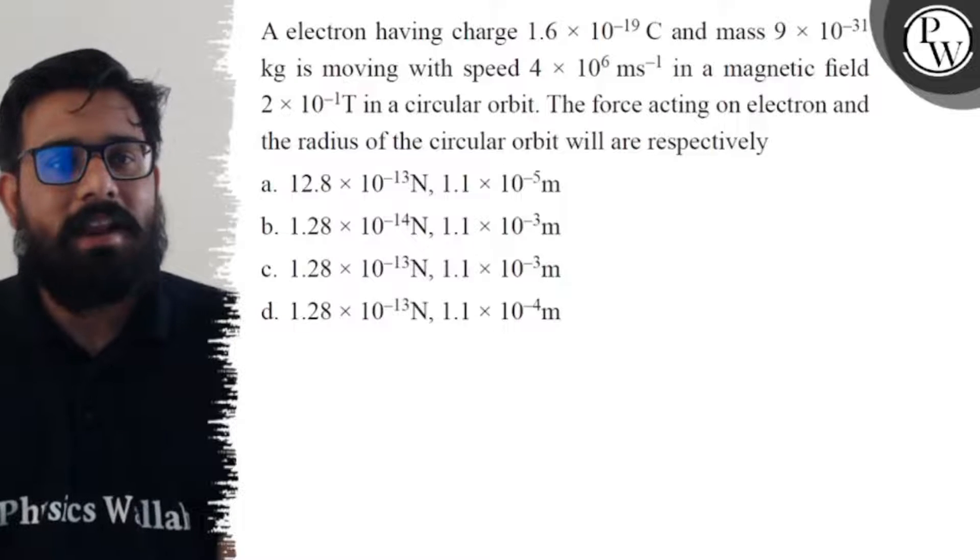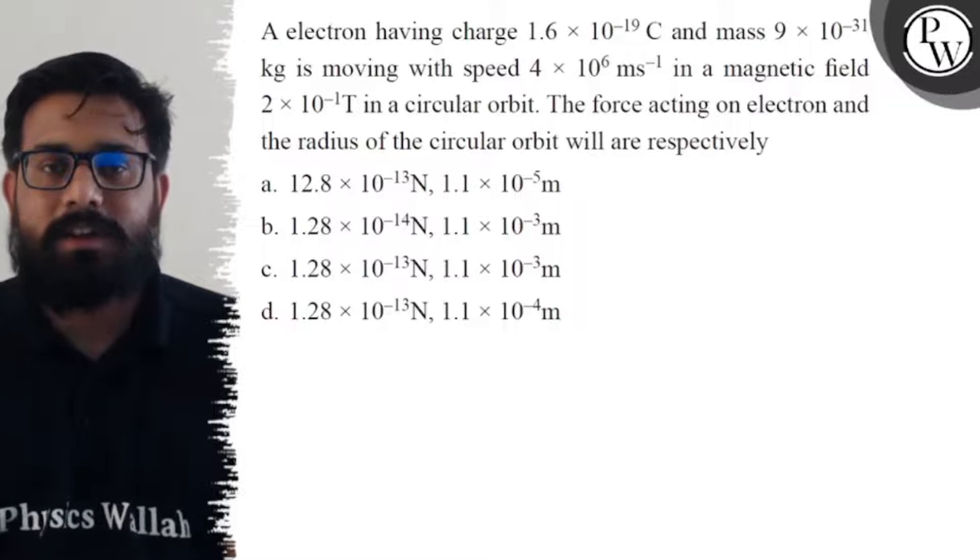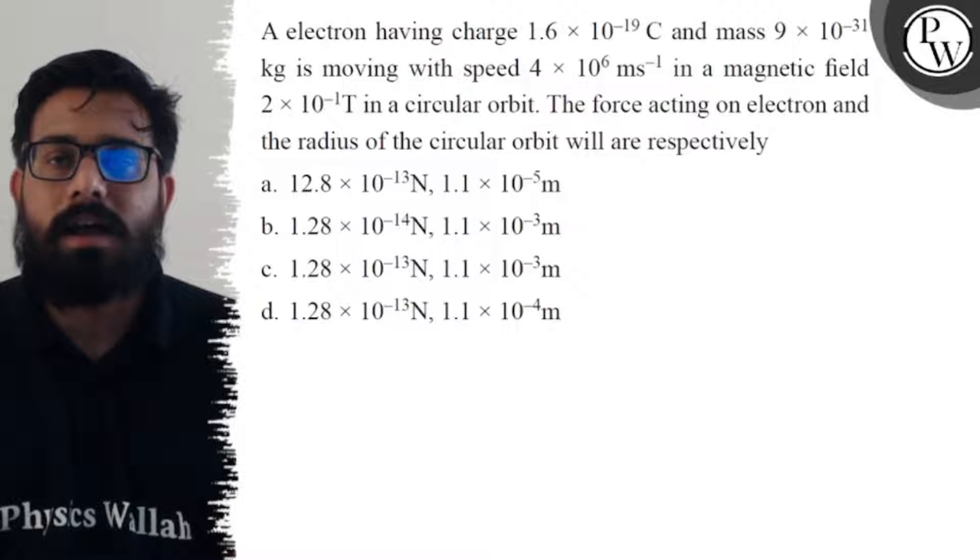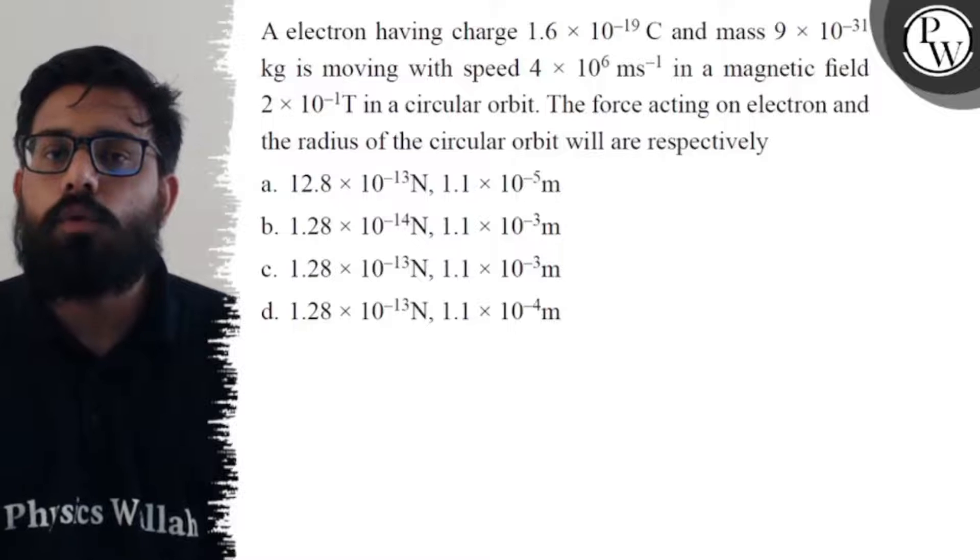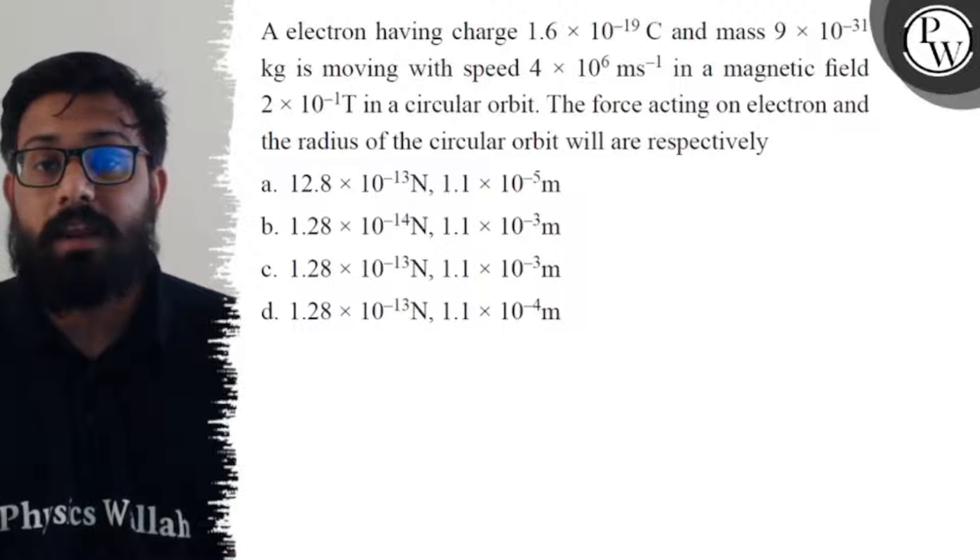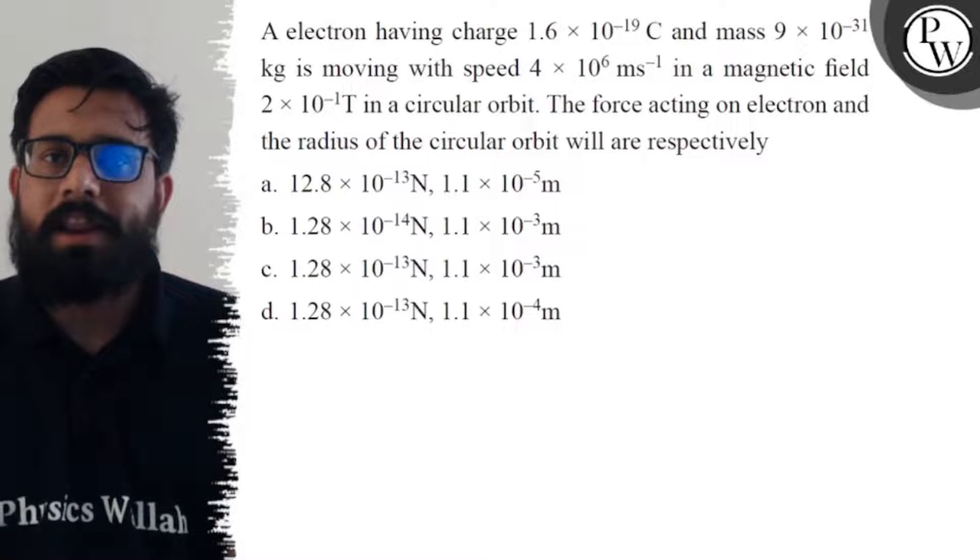Hello bachos, so let's see the question. An electron having charge 1.6 × 10^-19 coulomb and mass 9 × 10^-31 kg is moving with speed 4 × 10^6 meter per second in a magnetic field 2 × 10^-1 tesla in a circular orbit.